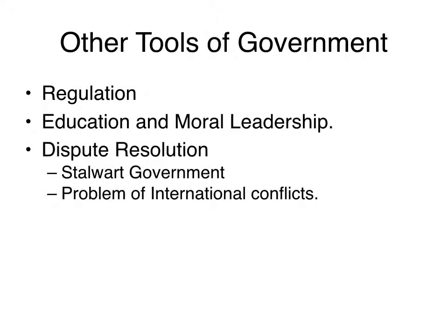Finally, the government can engage in dispute resolution to mitigate problems that may occur with disputes. But to do that, you have to have a fairly stalwart government. That can break down with international conflicts, which is why we have organizations like the United Nations to hopefully resolve them — though those get tricky when one government is in a dispute with another government.